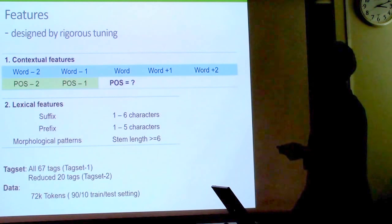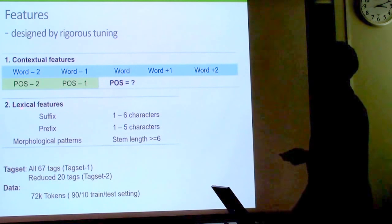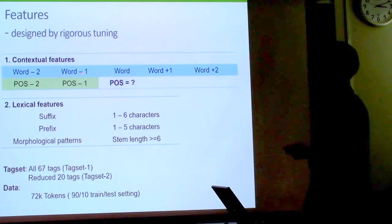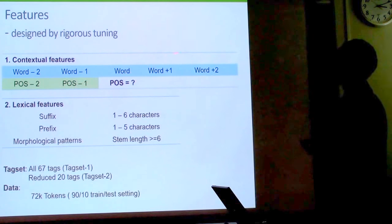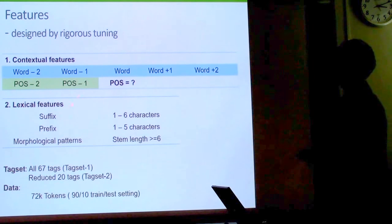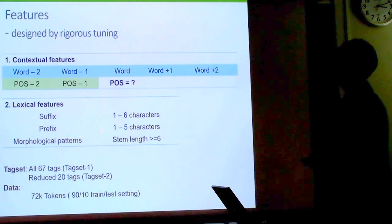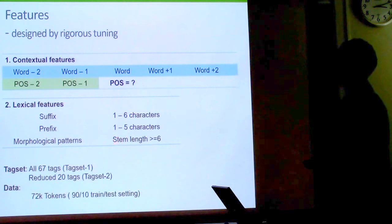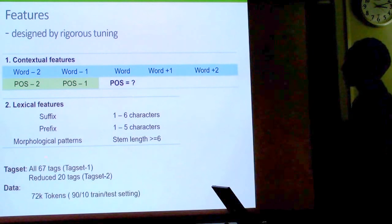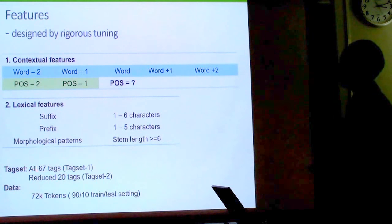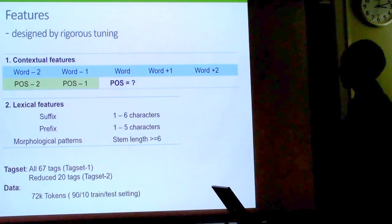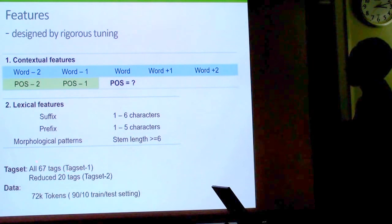For feature design, we included contextual features — two previous words and two previous POS tags, plus two future words — and lexical features with one-to-six suffix characters and one-to-five prefix characters, plus morphological stem patterns for stems of six or more characters. We designed two tag sets: one with 73 tags (67 found in data) and a reduced set of 20 tags, experimenting with both.